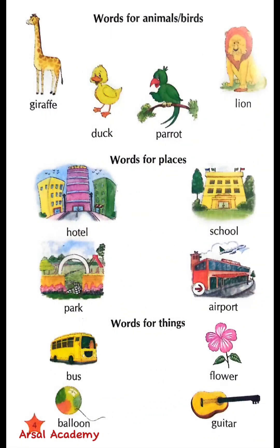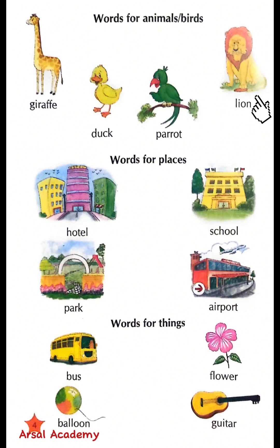Words for animals or birds: Giraffe, Duck, Parrot, Lion. Words for places: Hotel, Park, School, Airport.